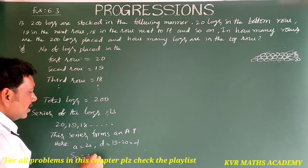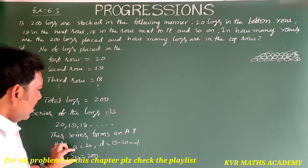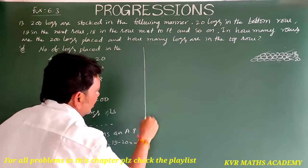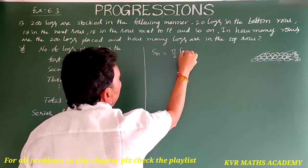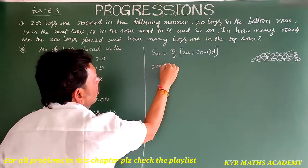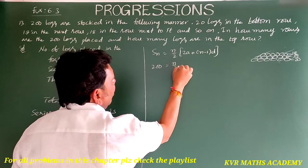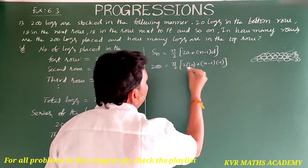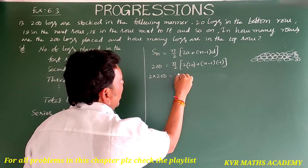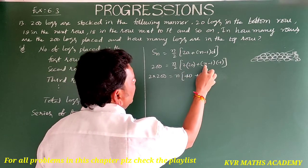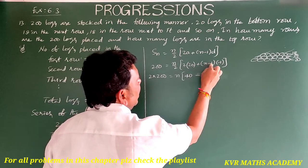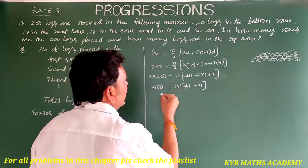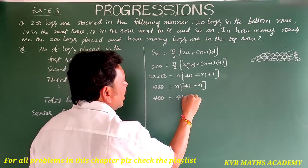Sn is equal to 200, already given as total logs. By using the Sn formula, let us find the number of rows N. Sn equals N by 2 into 2A plus N minus 1 into D. So, 200 equals N by 2 into 2 times 20 plus N minus 1 into minus 1. Transferring 2 to this side: 400 equals N into 40 plus 1 minus N, which gives 400 equals N into 41 minus N, that is 41N minus N squared.